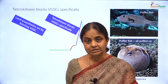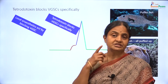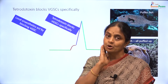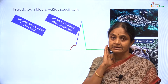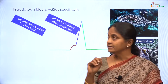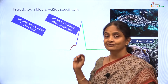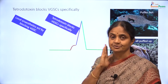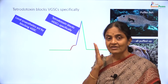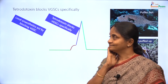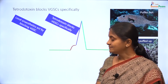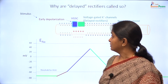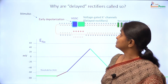Local anesthetics — for example, what is infiltrated when you go for a tooth extraction, which makes the whole place numb — are also blockers of voltage gated sodium channels. So they block nerve transmission and therefore block pain. That completes our discussion on sodium channels.